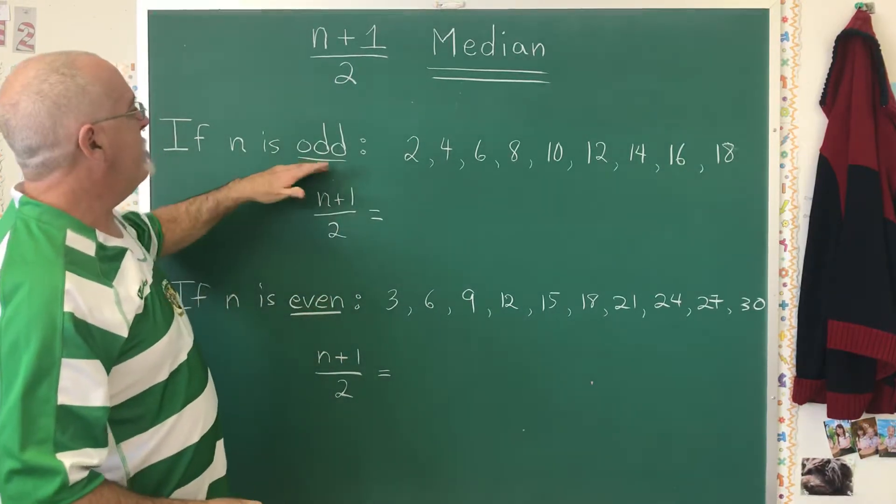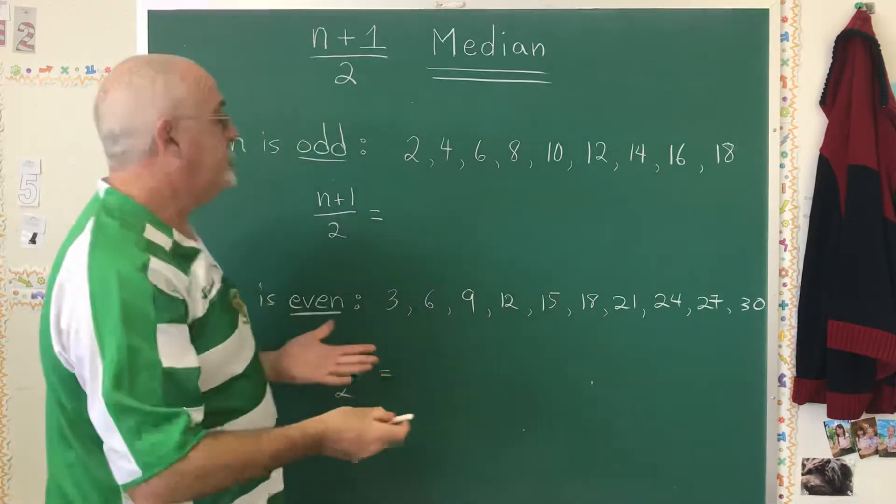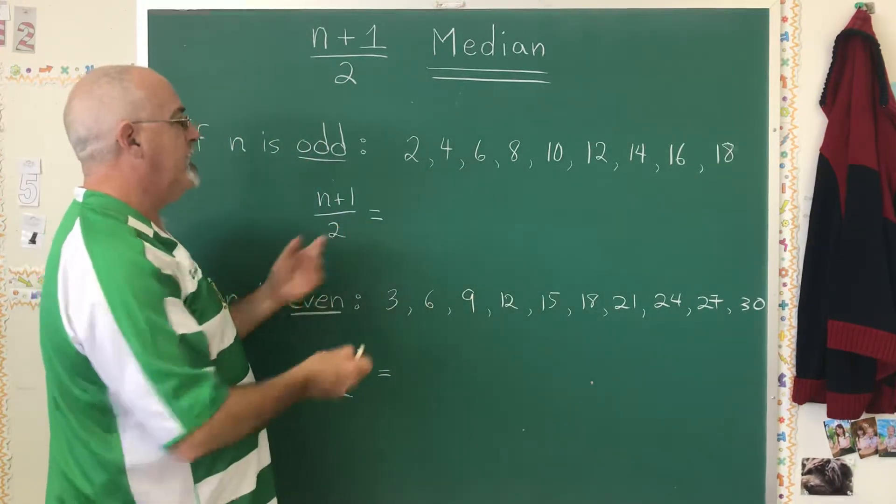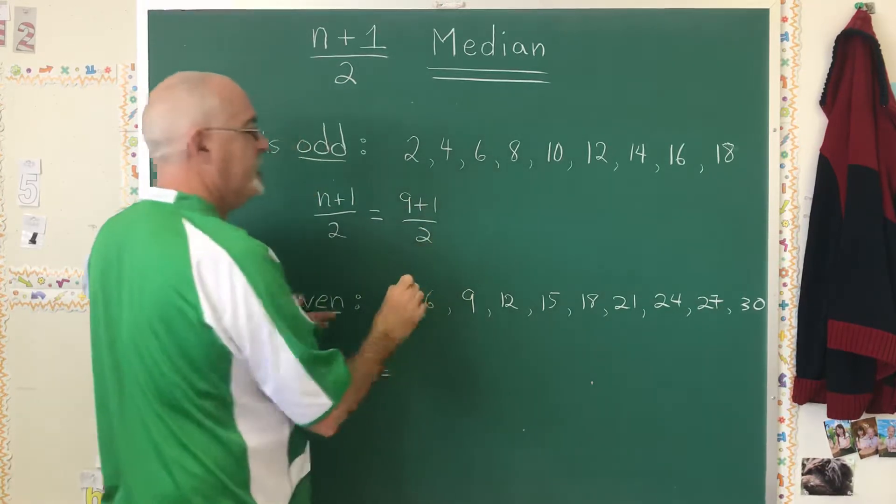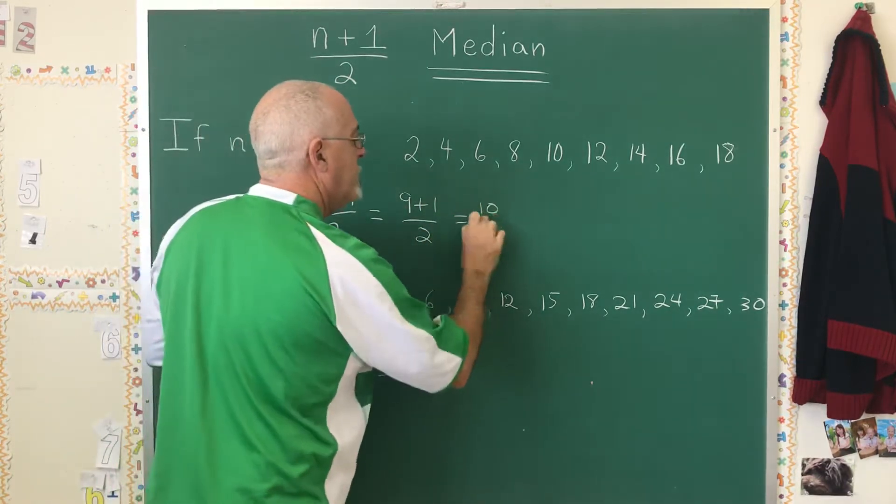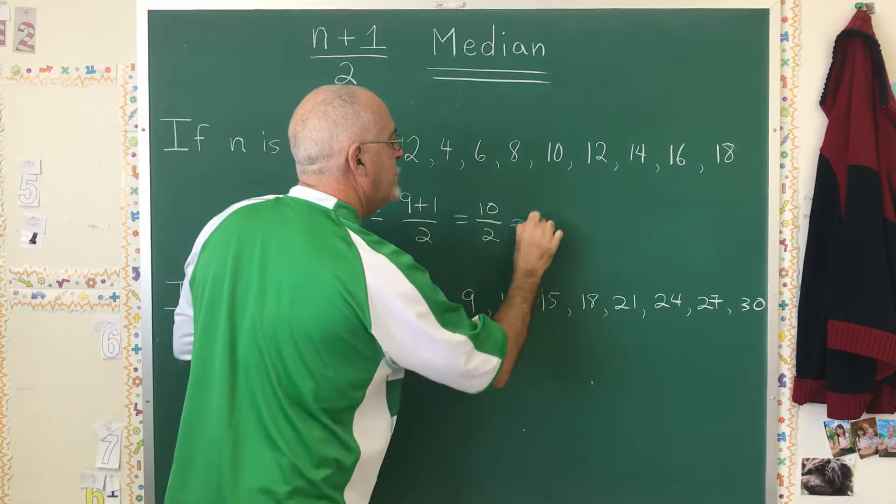Here we have an odd number of data. There are 9 values here. n plus 1 over 2 therefore is 9 plus 1 over 2, which simplifies to give 10 over 2, which gives us 5.